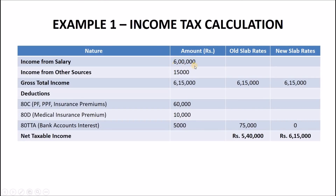Let's say your income from salary is Rs 6 lakhs and your income from other sources is Rs 15,000, making your gross total income Rs 6 lakhs 15,000. Let's say your investments include Rs 60,000 under Section 80C, Rs 10,000 under Section 80D, and Rs 5,000 under Section 80TTA, making your total investments Rs 75,000. So your net taxable income becomes Rs 6,15,000 minus Rs 75,000 which equals Rs 5,40,000. These deductions are applicable only if you are using old tax slab rates. Under the new tax slab rates, net taxable income remains Rs 6,15,000 as no deductions are applied.